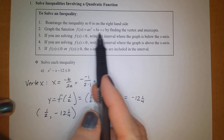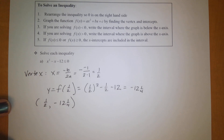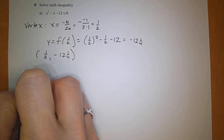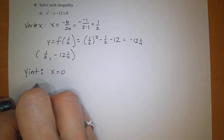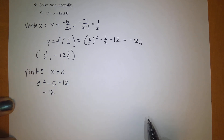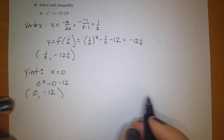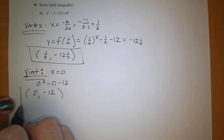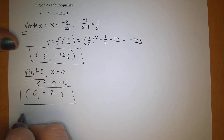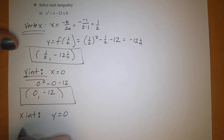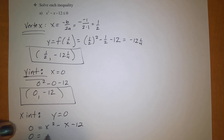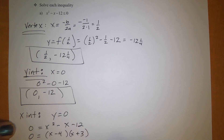Next, let's find the intercepts. For the y-intercept, we set x equal to 0, giving us 0 squared minus 0 minus 12, so the y-intercept is negative 12, at the point (0, −12). For the x-intercepts, we set y equal to 0 and solve. It turns out this is factorable, saving time, so we get two x-intercepts: one at 4 and one at negative 3.